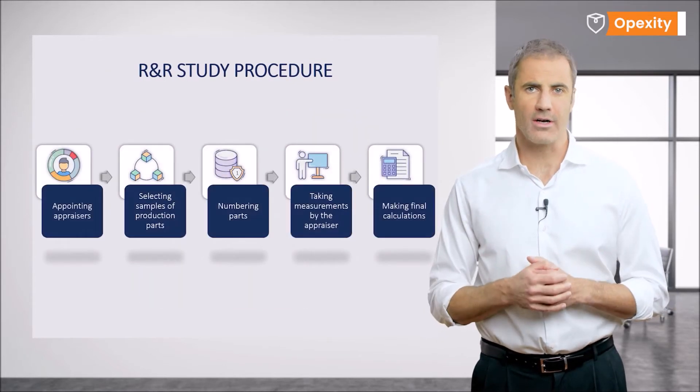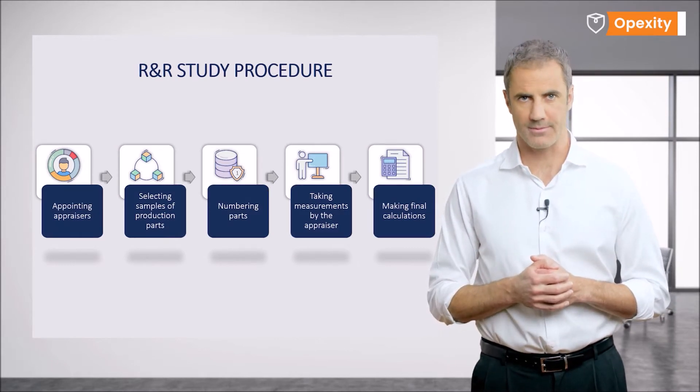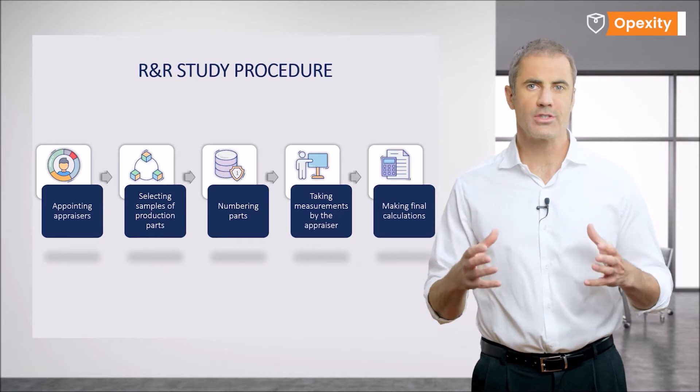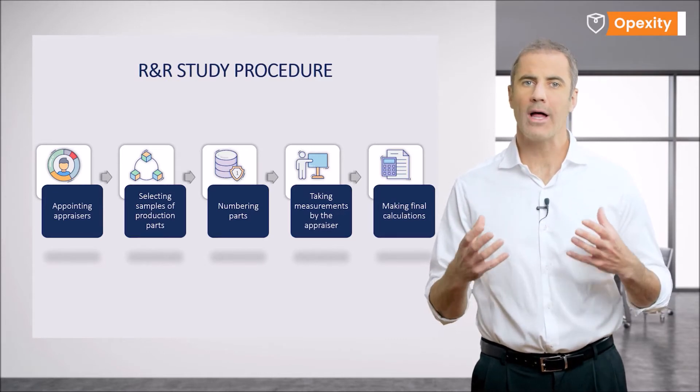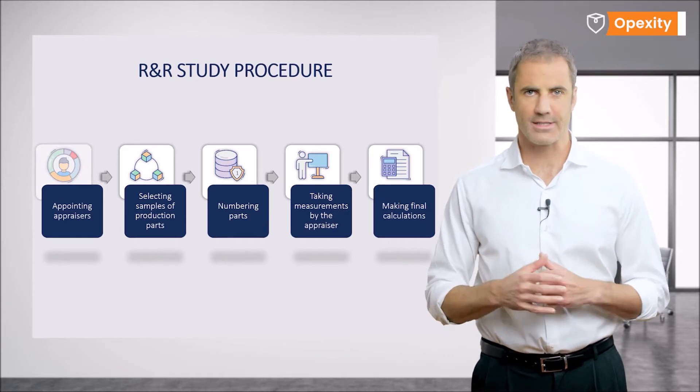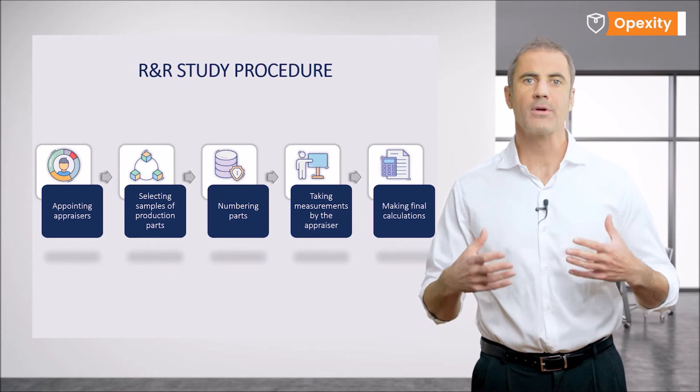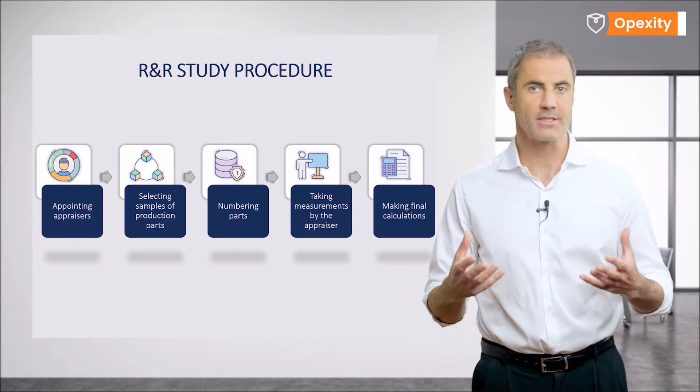In order to conduct the gauge R&R study, we have to consider the rules that will be applied for this purpose. The procedure described is an example and will help us prepare for the study. The first issue is to appoint appraisers, the so-called controllers. These are people taking the measurements of the prepared parts samples.